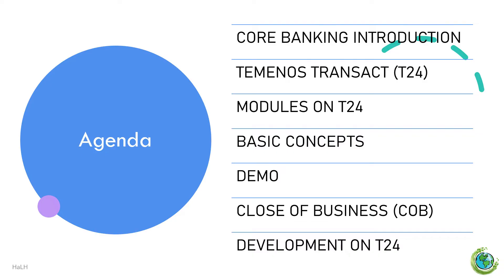The second topic is Teminos Transact, normally called T24. We'll explore T24, a widely used core banking system that powers various banking operations globally. The third topic is T24 modules. Within T24, there are specific modules that handle different aspects of banking functionality, and we'll dive into these modules and understand their roles.